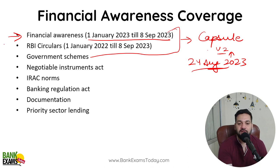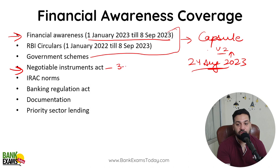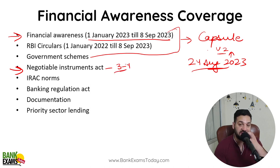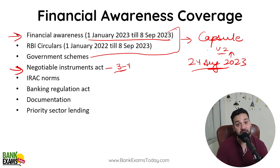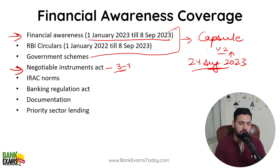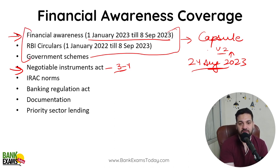Negotiable Instruments Act is very, very important. Every year there are like 3-4 questions from it. Out of 42 questions, 3-4 are directly from the Negotiable Instruments Act — it's a very important topic. The three key topics are: Financial Awareness, RBI Circulars, and Government Schemes.